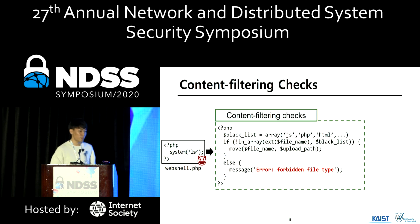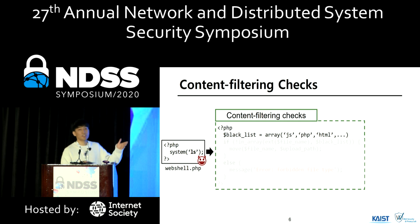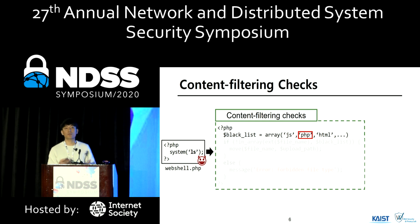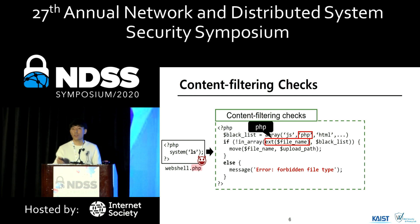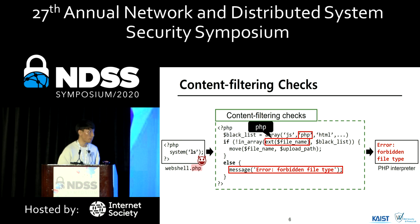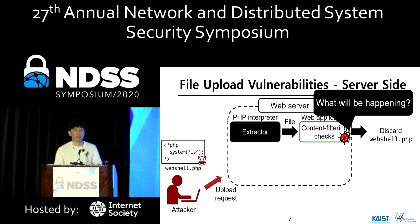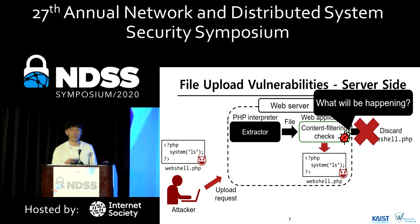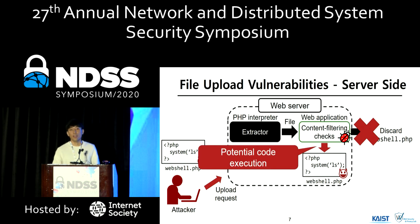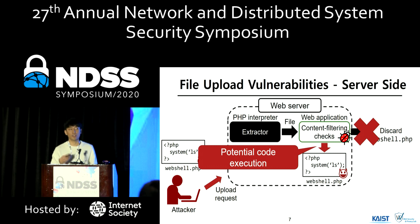For a more detailed explanation, let's assume we have content filtering checks in a web application. First, there is a blacklist that contains inadmissible file name extensions, and PHP is one of the security-critical file name extensions. Because the extension of the uploaded file name is PHP, this file will be rejected by the application. Then, what happens when there are bugs in content filtering checks so that the malicious webshell.php file is successfully uploaded to the web server? A system administrator may accidentally run this executable, or existing bugs may allow execution of this uploaded PHP file.